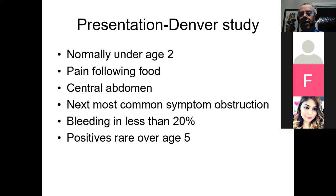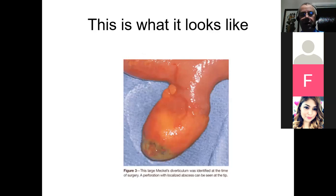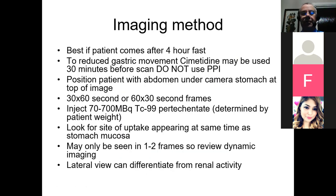Bleeding, which often people put on the request form, was present in less than 20% of patients with a positive study, as was anemia. So it's really the pain that's the key positive. It's rare over the age of five, though some people get into adulthood with an undiagnosed active Meckel's. Here is what one looks like — from a surgical review you can see a definite diverticulum with abnormal tissue at the end where the gastric ectopic mucosa is, which releases acid that can affect the gut wall.